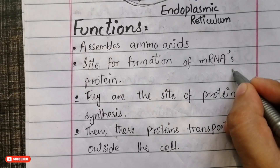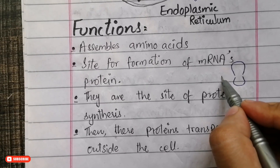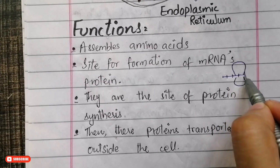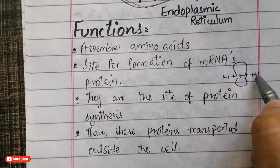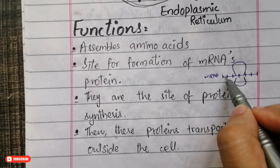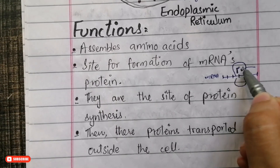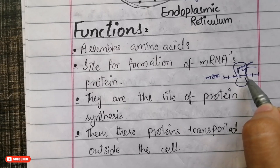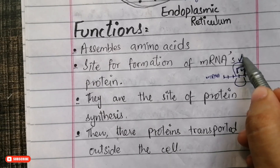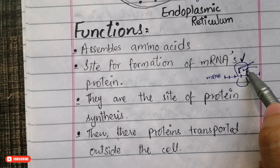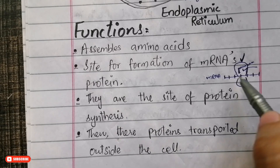Let me draw and walk through how messenger RNA translates into protein. Suppose this is a messenger RNA strand that has just left the nucleus and is now present in the cytoplasm. This messenger RNA strand connects with amino acids brought by transfer RNA and combines them to form a long chain of proteins. This site where the messenger RNA converts its message into long polypeptide chains is known as the ribosome.